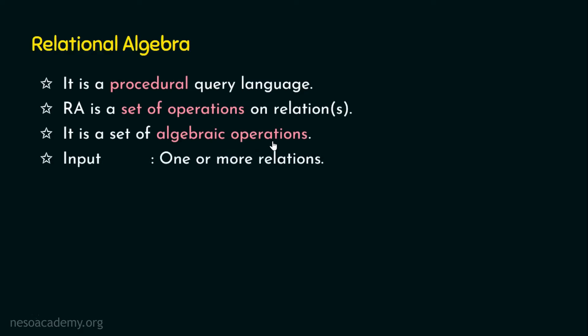The input is one or more relations and the output is a relation. Why one or more? There are certain relational algebra operators that are unary, taking only one relation as input. There are others that take two or more inputs, so they are binary or ternary. In a nutshell, relational algebra takes one or more relations as input and produces another relation as output.